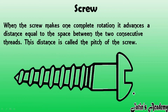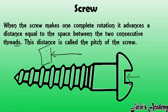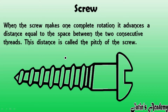When a screw makes one complete rotation, it advances a distance equal to the space between two consecutive threads. Whenever we apply force in a rotational form to push the screw into a wall, one complete rotation is exactly equal to the distance between two consecutive threads. This distance is known as the pitch of a screw.